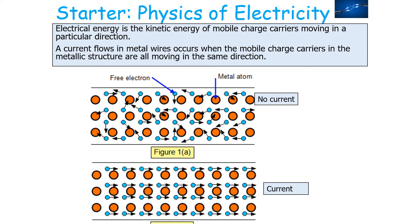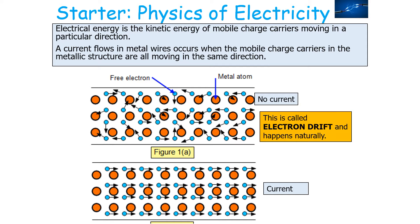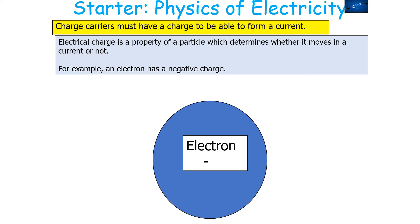A current flows in a metal wire when the mobile charge carriers in the metallic structure are all moving in the same direction. Naturally, free electrons move around randomly in the material — this is called electron drift and can happen naturally. But when the mobile charge carriers are all moving in one particular direction, you will achieve a current. The reason why mobile charge carriers can form a current is because they have a charge. Electrical charge is a property of a particle which determines whether it moves in a current or not. For example, an electron has a negative charge.